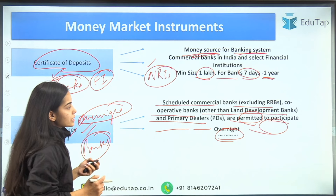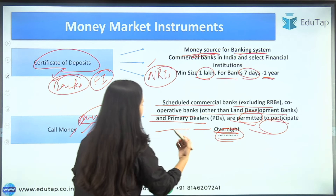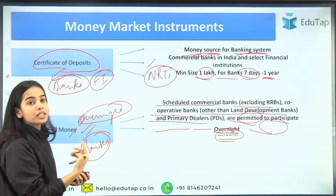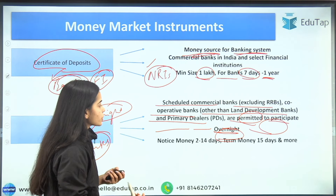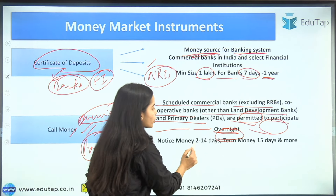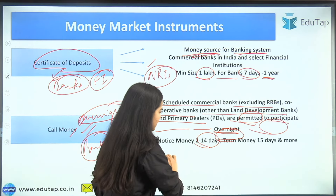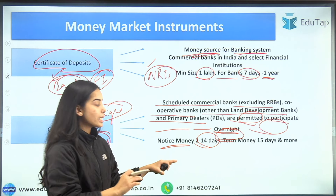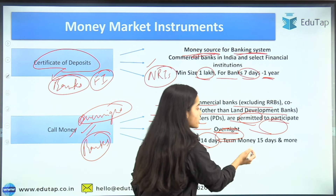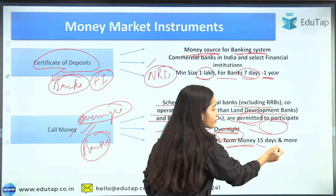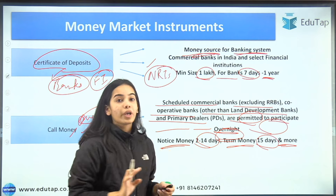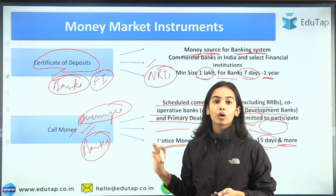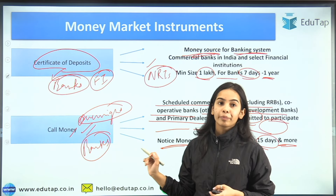Call money is overnight — that is for one day. Notice money is for 2 to 14 days; it is the same as call money but for 2 to 14 days. Then comes term money, which is for 15 days or more. These are the main instruments circulated in the money market.